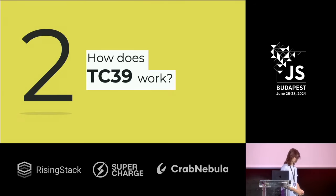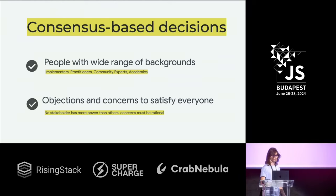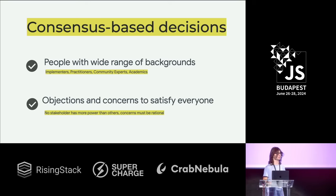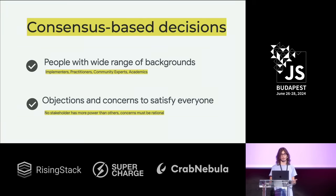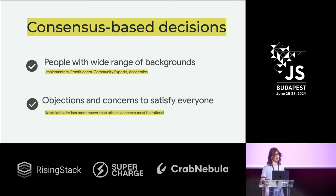So how do all these people do something? Everything within this committee is based on having full consensus — making sure that everybody agrees on everything they're doing. This is because we have people with a very wide range of backgrounds coming from many different points of view. We have a system where everybody can say: no, this might look good for you, but from my point of view this is absolutely terrible and should not be added to the language. This makes sure that whenever we develop a new feature, we take into account every single concern and every single potential problem.